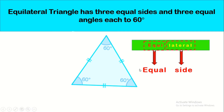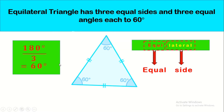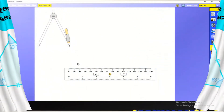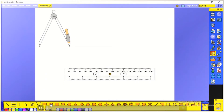A triangle that has three equal sides is called an equilateral triangle. As you see, the sides have the same indication, showing they have the same length. With three equal sides, it will also have three equal angles. Each angle is 60 degrees because the sum of angles is 180 degrees, divided equally by three, giving 60 degrees for each angle.